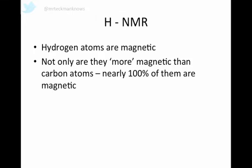Hydrogen atoms, as well as carbon-13 atoms, are magnetic. Not only are they more magnetic than carbon atoms, giving us a higher signal-to-noise ratio, making them clearer and our method more precise and accurate, nearly 100% of them are magnetic. So pretty much all of the hydrogen atoms that you get are magnetic, which we'll see later has some pretty big implications for our spectra.